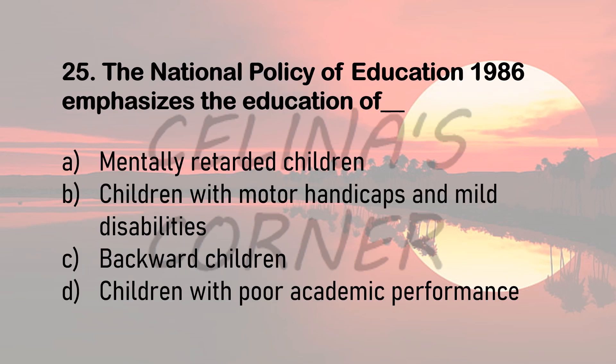Question 25. The National Policy of Education 1986 emphasizes the education of dash — mentally retarded children, children with motor handicaps and mild disabilities, backward children, or children with poor academic performance? In the NPE of 1968, they tried to integrate students with disabilities in regular schools. In the next NPE of 1986, there is a special section for the education of students with disabilities, and it emphasizes that children with motor handicaps and mild disabilities should be integrated in normal schools.